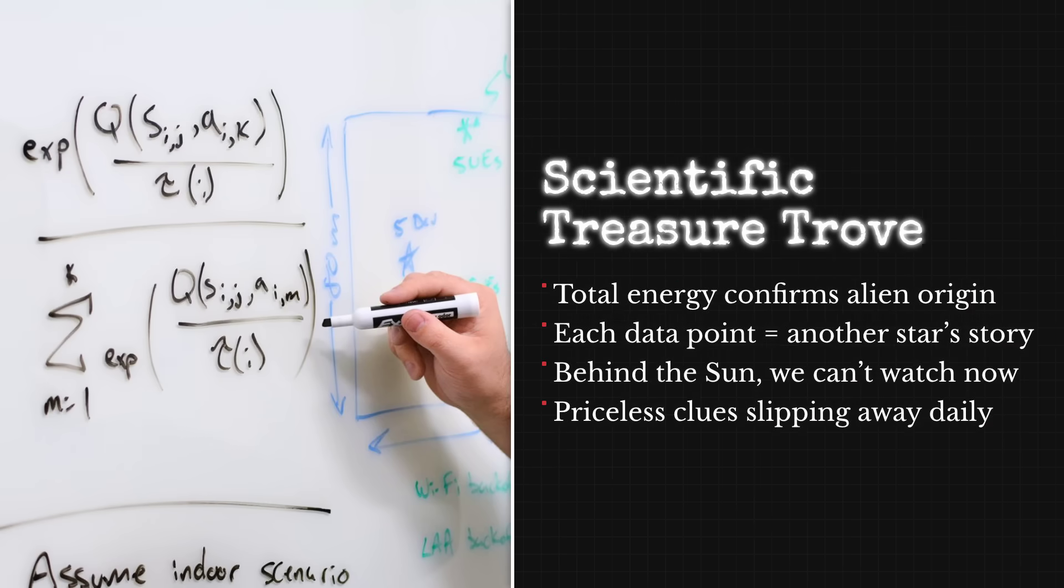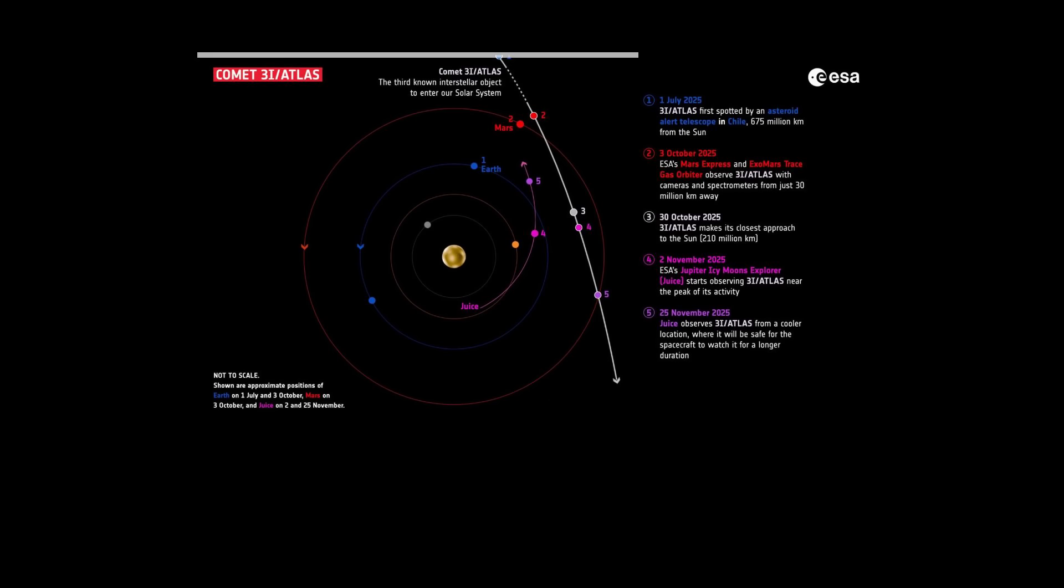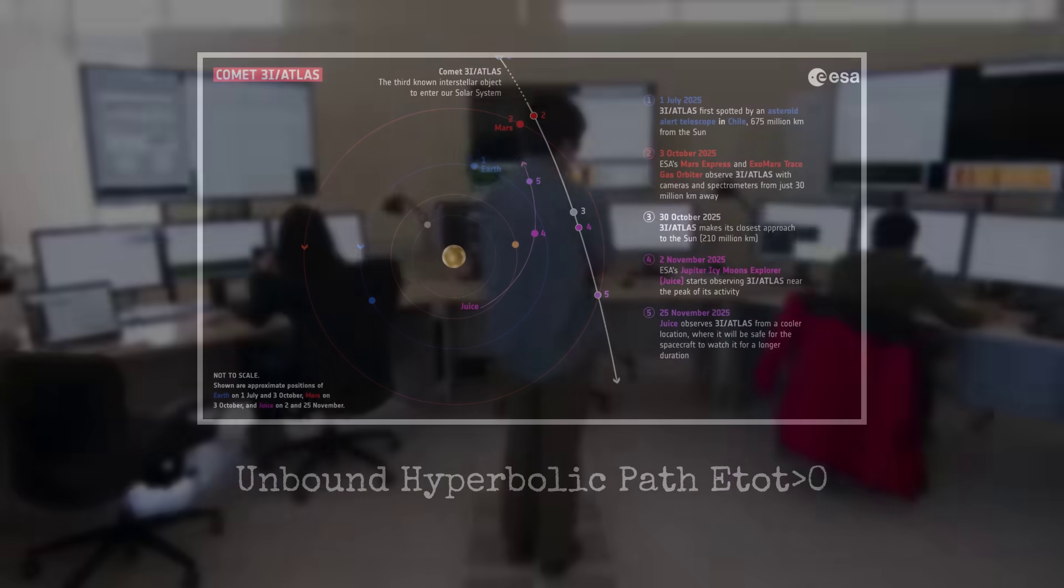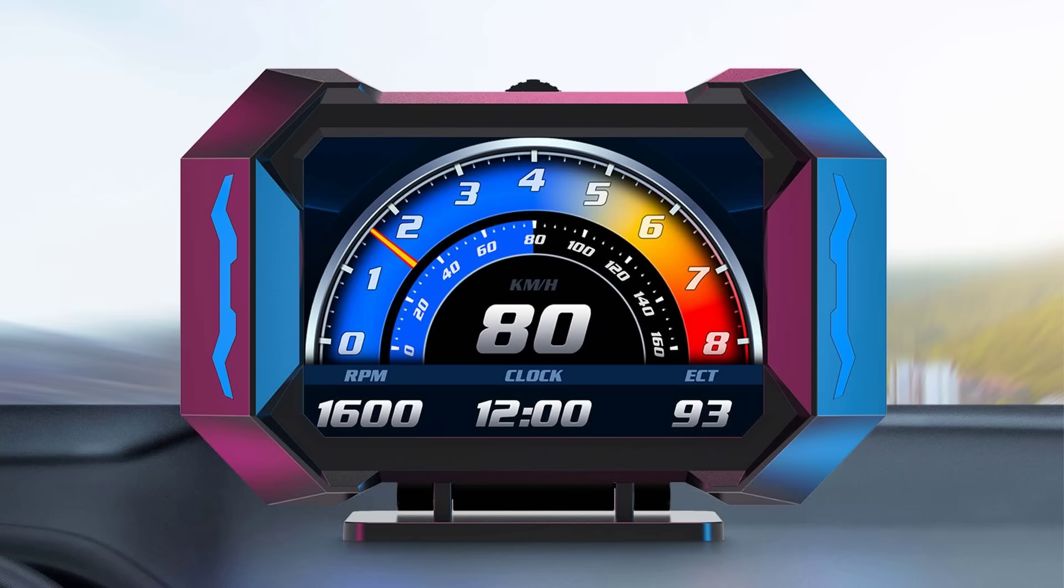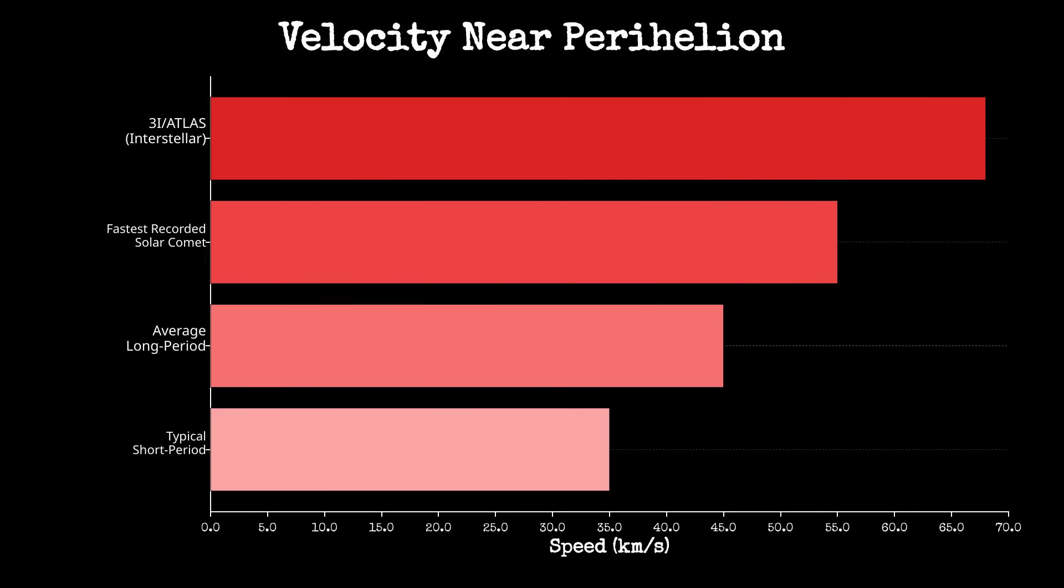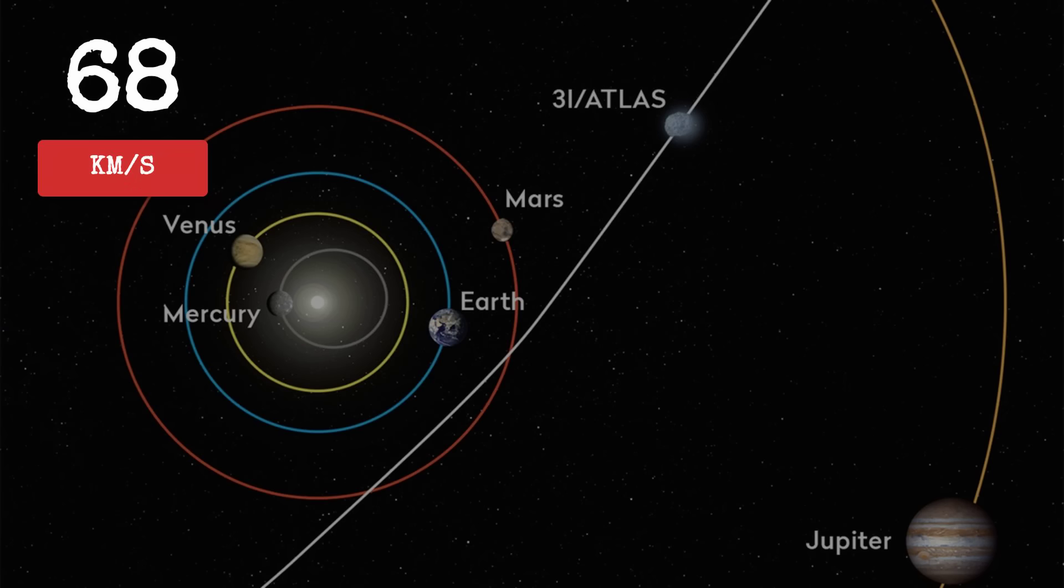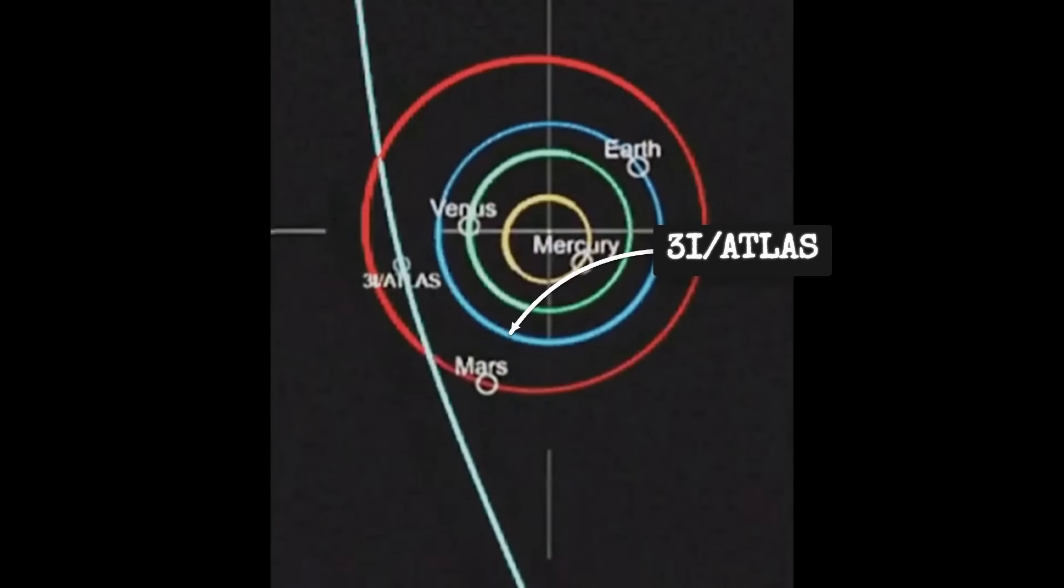More technically, we can calculate the object's total energy. That's kinetic energy plus gravitational potential energy. For bound orbits, this total energy is negative. For unbound hyperbolic orbits, it's positive. 3I/Atlas has positive total energy relative to the sun, confirming its interstellar origin. The speed also tells us this story. At its current distance, an object from our solar system would be traveling much slower. But 3I/Atlas is moving at 68 kilometers per second at perihelion, which is consistent with an object that entered our solar system with excess velocity from interstellar space.